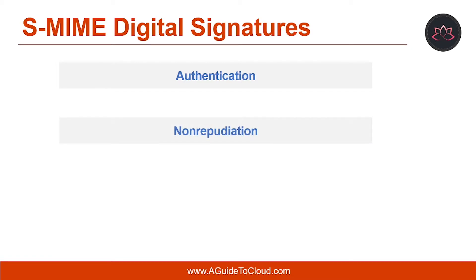Another capability is non-repudiation. The uniqueness of a signature prevents the owner of the signature from disowning the signature. This capability is called non-repudiation. Thus, the authentication that a signature provides gives the means to enforce non-repudiation. The concept of non-repudiation is most familiar in the context of paper contracts. A signed contract is a legally binding document and it is impossible to disown an authenticated signature.